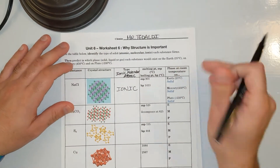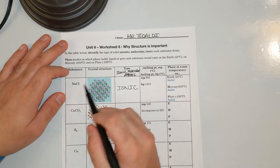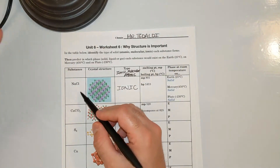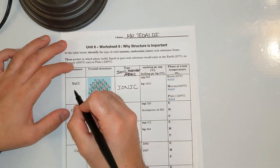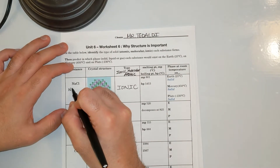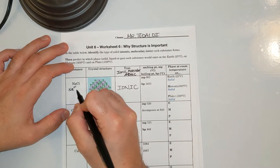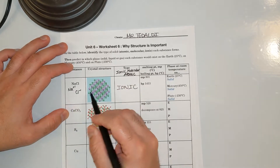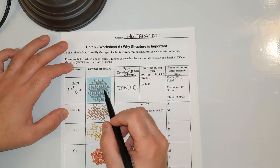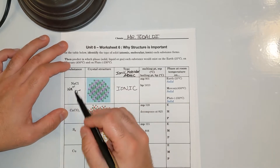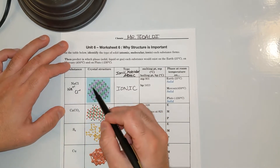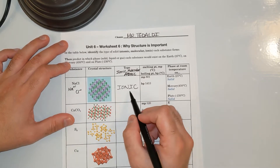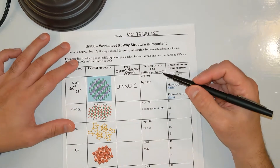I have the first one done. Here's NaCl. We already know that NaCl is an ionic compound — it has Na⁺ and Cl⁻. And if we didn't know that was the formula, we could see two different colors and they're all completely connected. It's ionic.